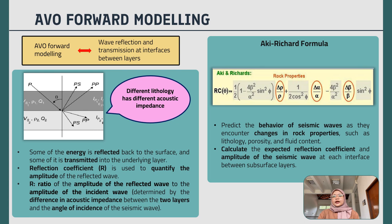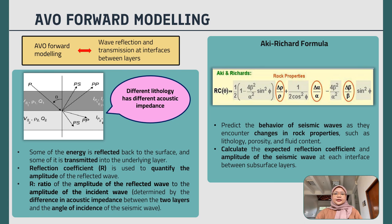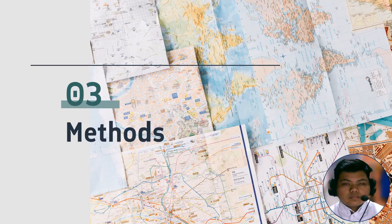There are a few formulas to perform AVO forward modeling, and one of them is the Aki-Richards formula. This formula is used to predict the behavior of seismic waves as they encounter changes in rock properties such as lithology, porosity, and fluid content. It is also used to calculate the expected reflection coefficient and amplitude of the seismic wave at each interface between subsurface layers. I will now pass the presentation to Farid to talk about the methodology and results.